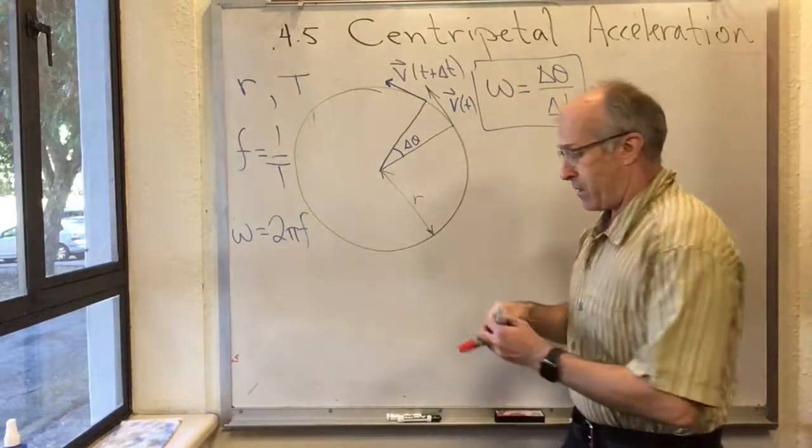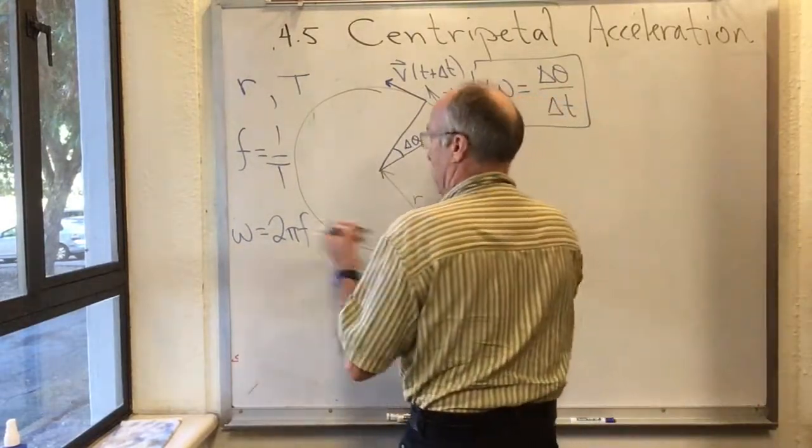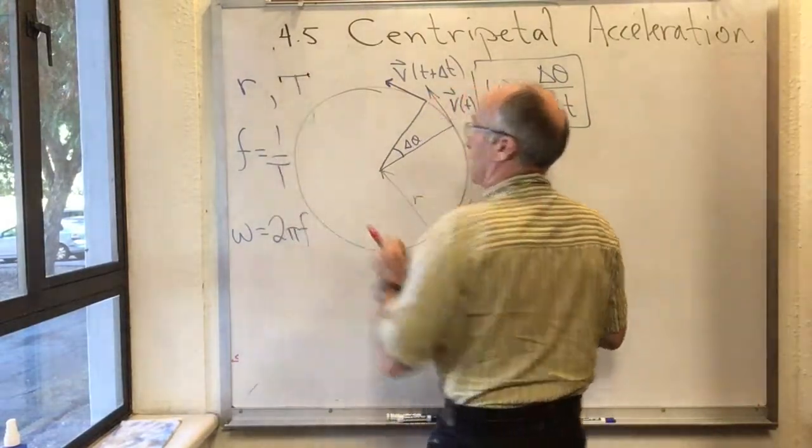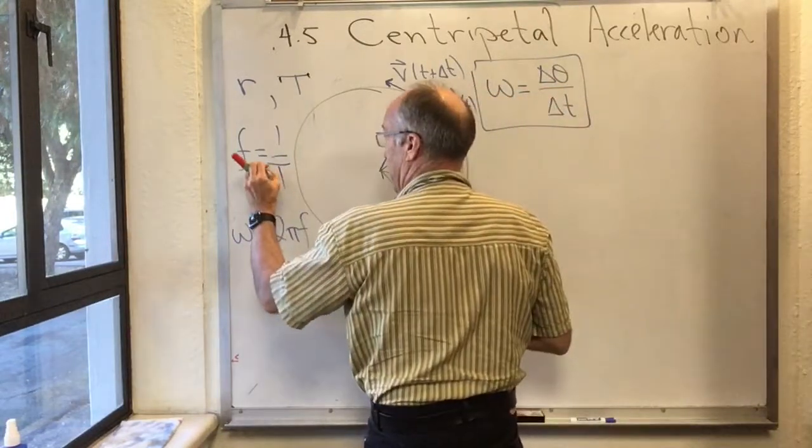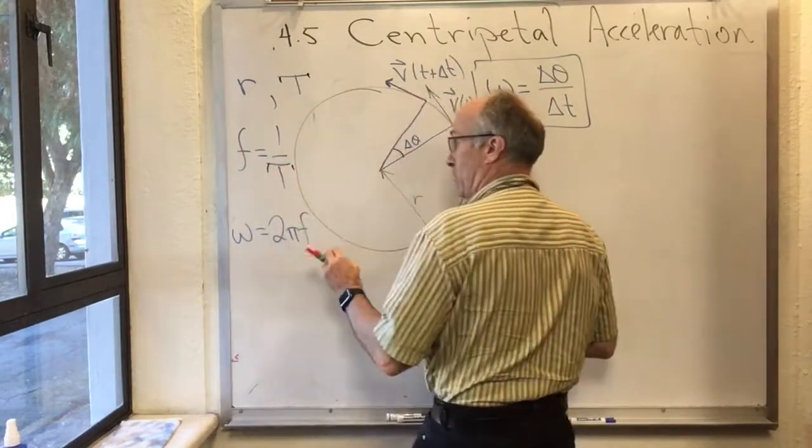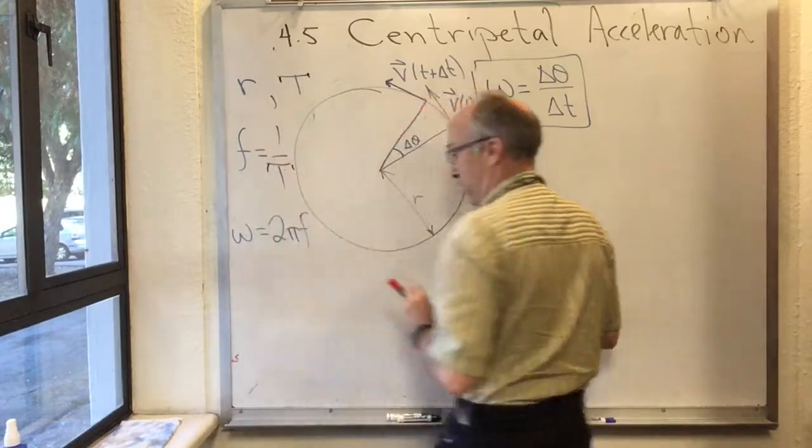The time that it takes to go around the circle is capital T, the period. By definition, the thing we call the frequency is 1 over the period.